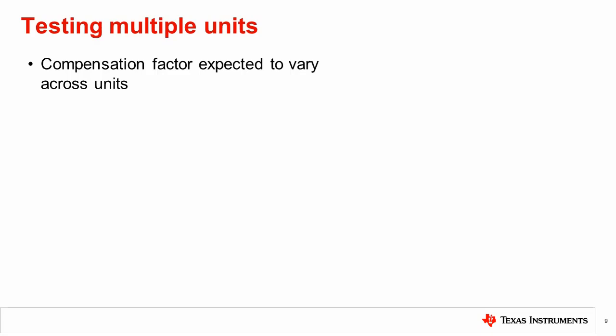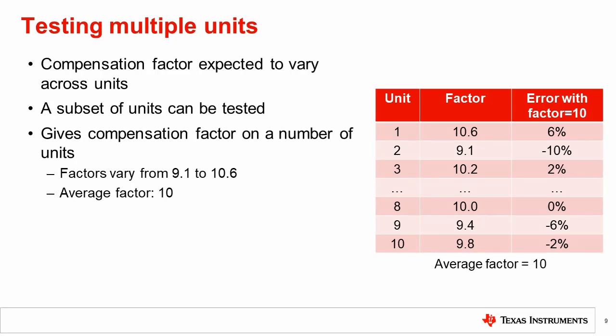Cover glass variation may be provided by the manufacturer. However, mechanical tolerances at the system level, as well as other system level variations, will also impact the light reaching the sensor on each unit. Testing on a number of units will give an idea of this variation. For example, the compensation factor may vary from 9.1 to 10.6 across 10 units with an average of 10. The average compensation factor of 10 would be taken and used across all units. In this case, we expect error ranging from minus 10% and plus 6% on the units tested.